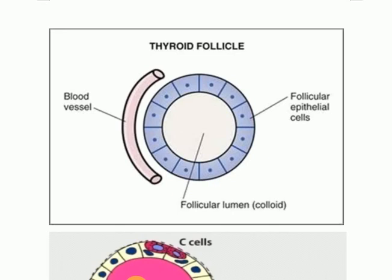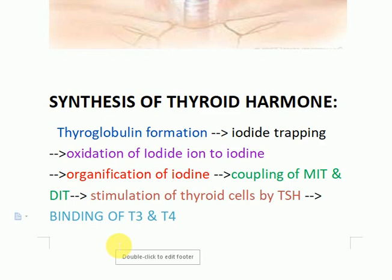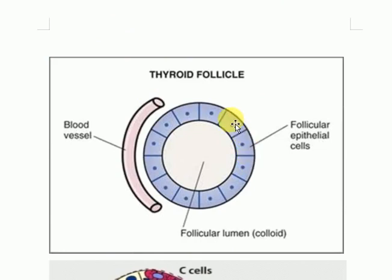The third step is the oxidation of iodide ion into iodine. The iodide ion loses electrons and converts into iodine, which is the active reactive form. Then in the next step, it is organified by combination with tyrosine on thyroglobulin — this step is called organification of iodine.